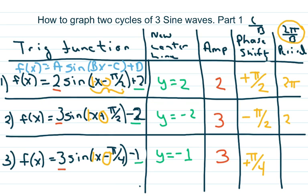We're going to graph two cycles and go pretty quickly, so you're welcome to pause or write down the equation we're working on. So for the first one, we're going to graph f of x equals two sine of x minus pi over two, plus two.